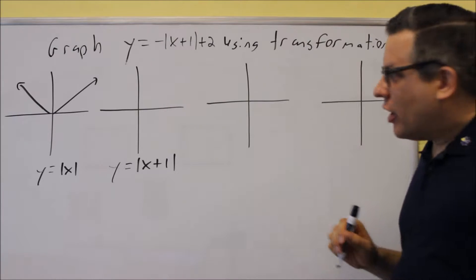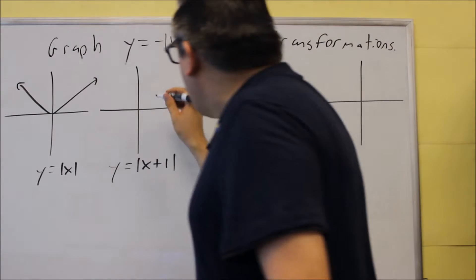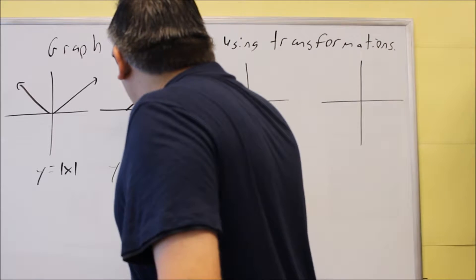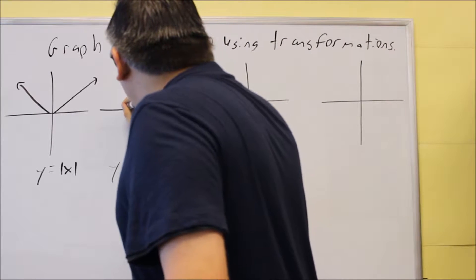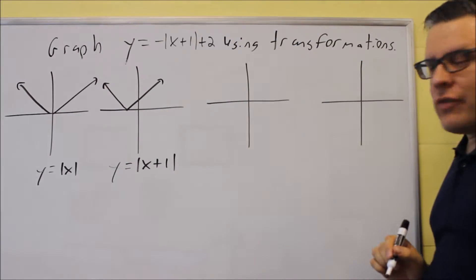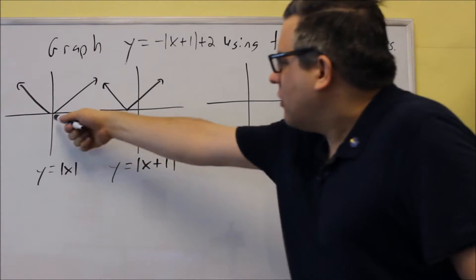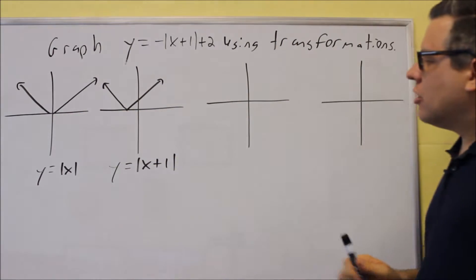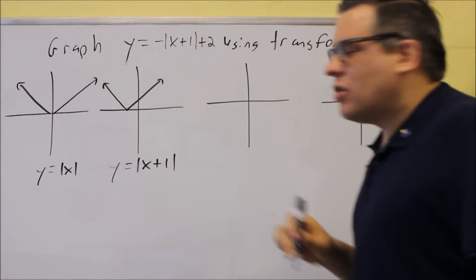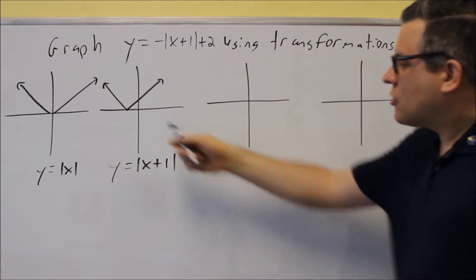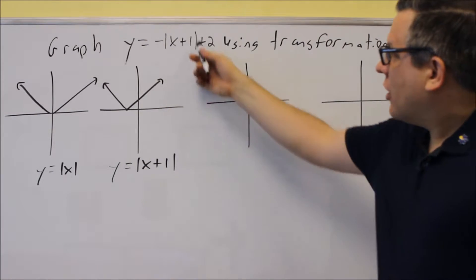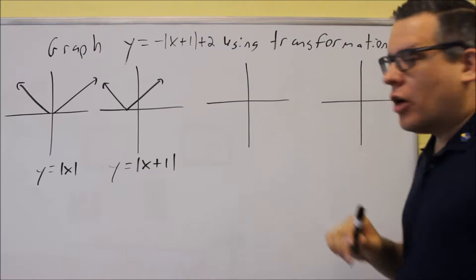We're going to do the absolute value of x plus 1. We already talked about this in a previous problem — that was going to be your graph shifted over 1 to the left. So originally we had it at (0, 0), and we moved the whole graph over 1 to the left. That takes care of the inside transformation.